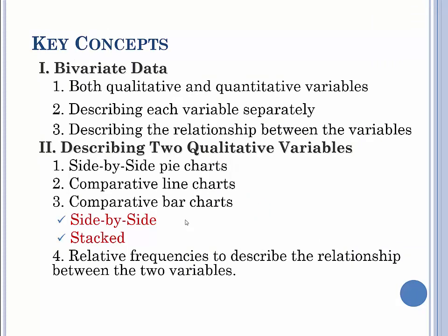Here are the key concepts we learned in this one. We can do bivariate data whether it's qualitative or quantitative. It describes each variable separately. We can describe the relationship between the variables. If we have two qualitative variables, we can do the side by side pie charts, probably the best. Comparative line charts, not so good. Comparative bar charts are okay. I think the side by side is better than the stack. But again, it's personal preference. You can also do relative frequencies to describe the relationship between the two variables. And that's kind of what you get from the pie charts.